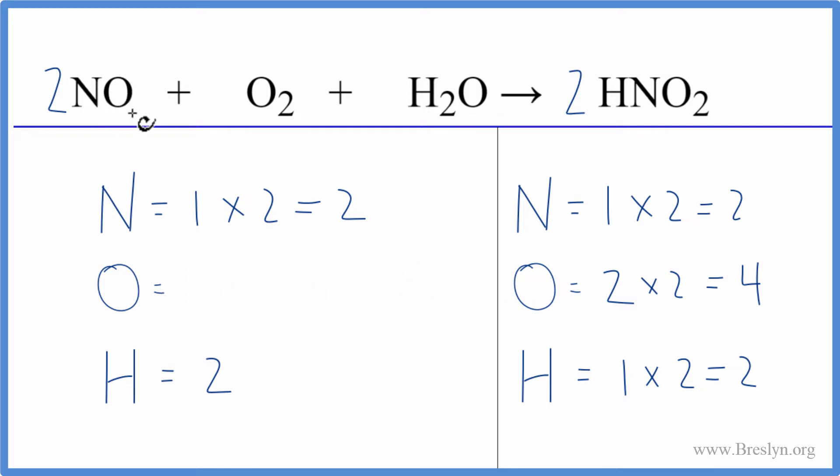So now we have 1 times 2, 2 oxygens, plus 2 oxygens, plus the 1 oxygen in water. So we have 5. So this is not balanced. I don't have a lot of options here but I can see that I have 5 here and only 4 here. So I know that this coefficient is going to have to be larger than 2.